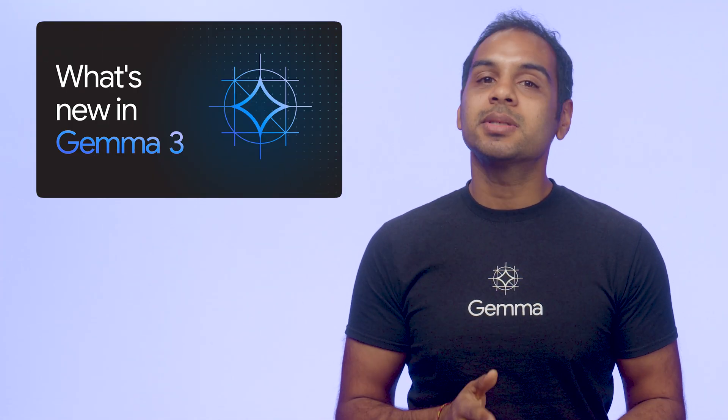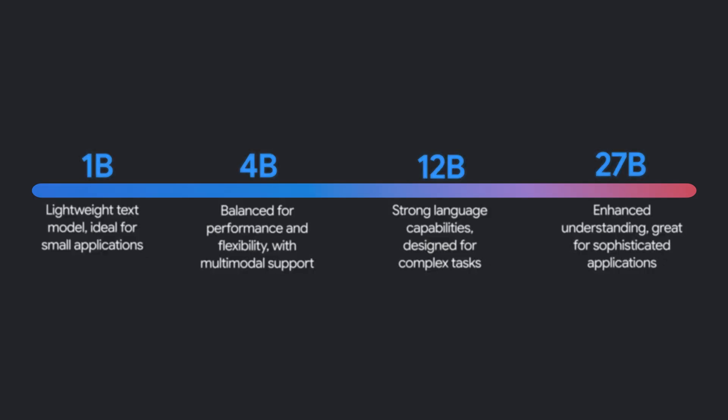We just launched Gemma 3, which is the newest iteration in the Gemma family. This new version has many capabilities like multimodality, multilinguality, and long context. It also comes in different sizes, as you can see here. Let's break down what each of these concepts mean so you can pick the best version for your use case.